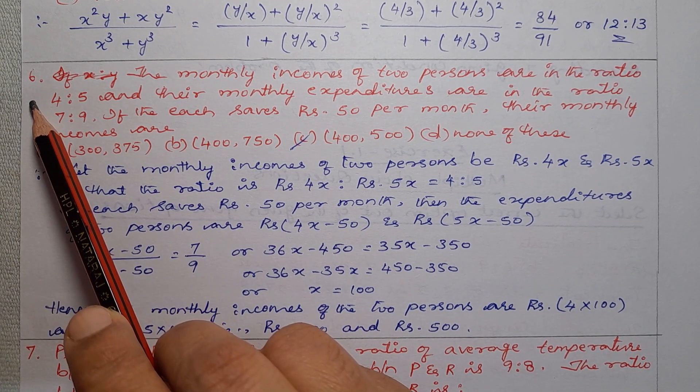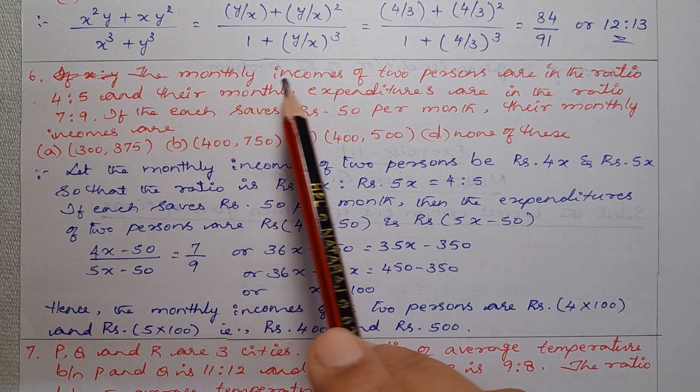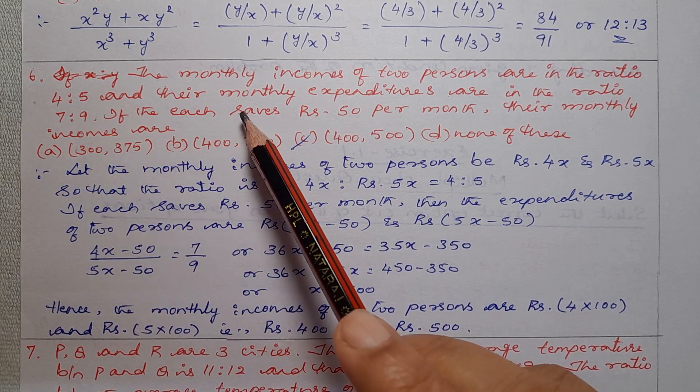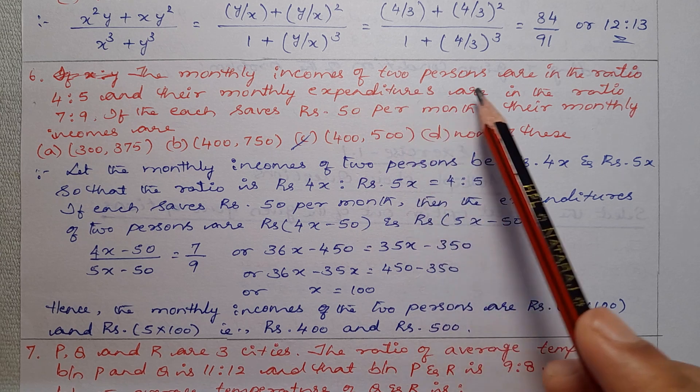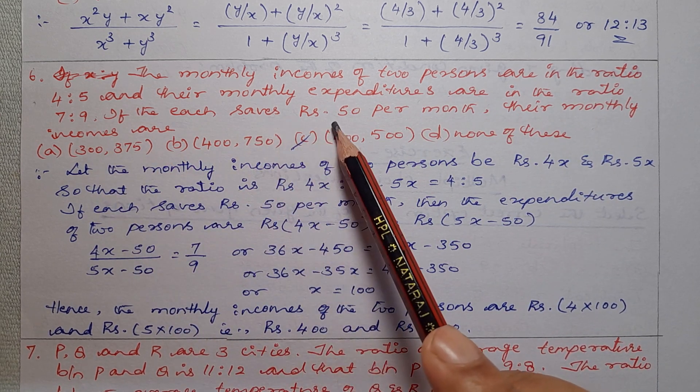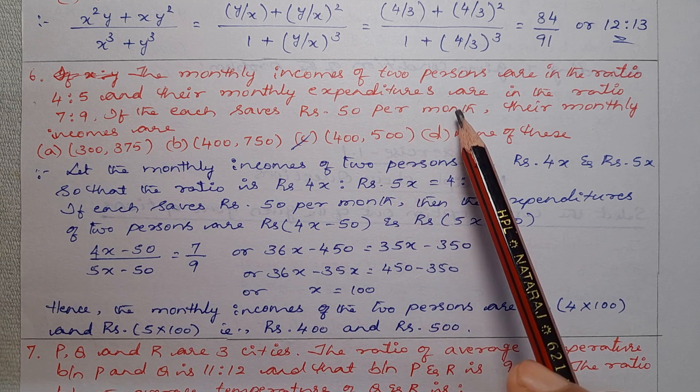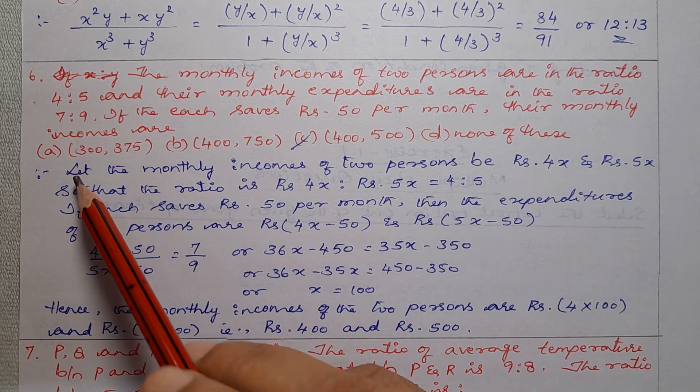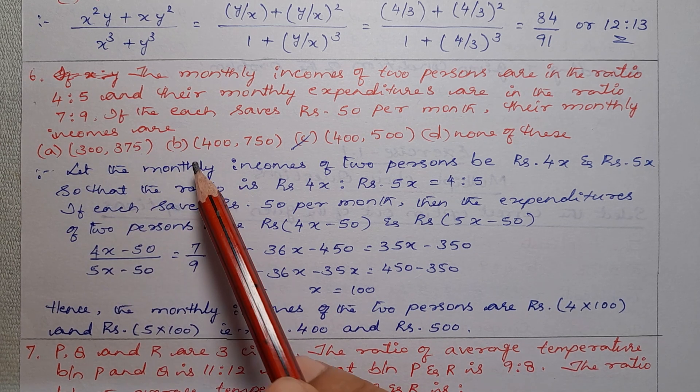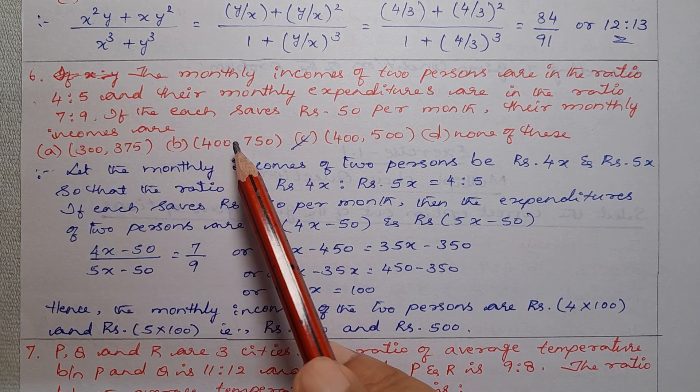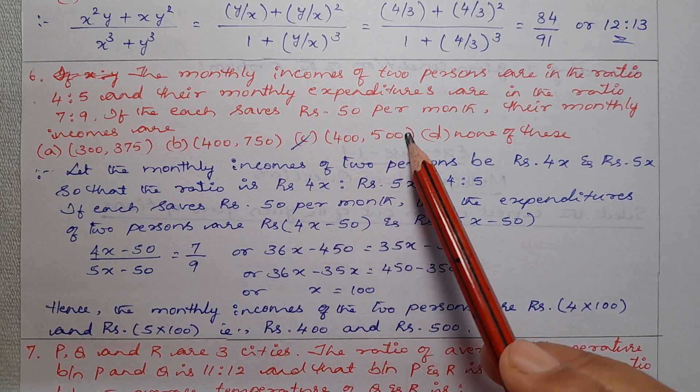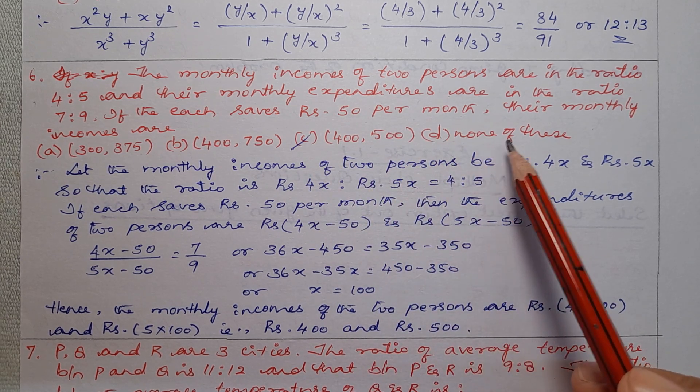Problem No. 6: The monthly incomes of two persons are in the ratio 4 is to 5 and their monthly expenditures are in the ratio 7 is to 9. If each saves rupees 50 per month, their monthly incomes are: option A 400,750, option B 400,500, option C 300,375, or option D none of these.